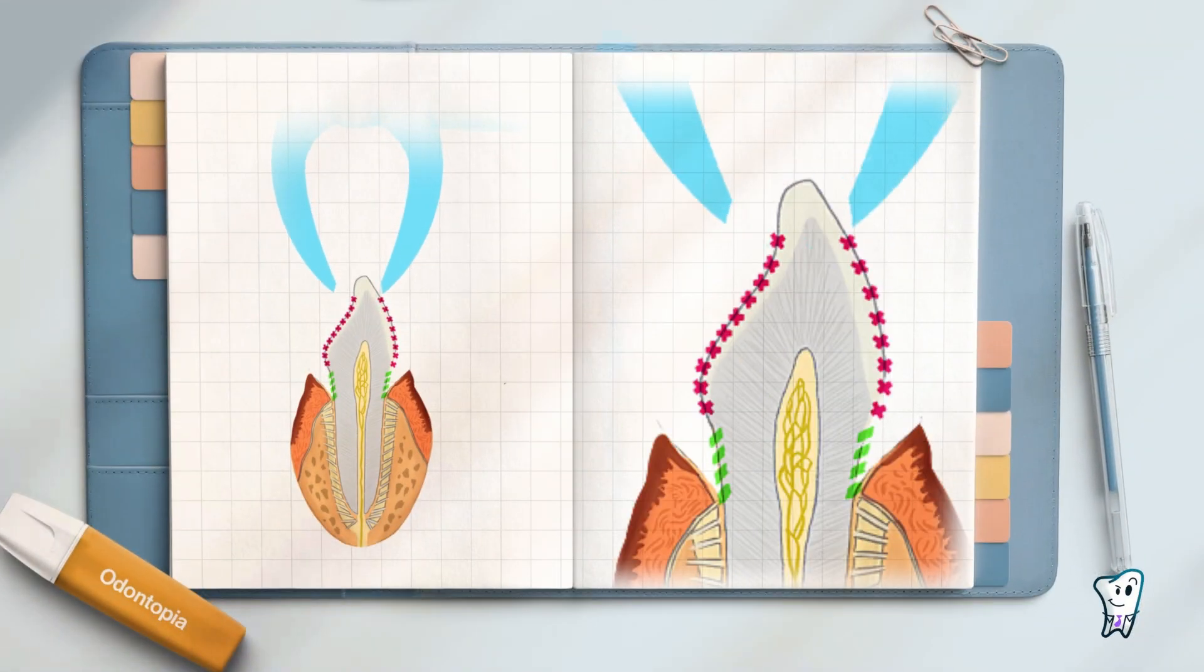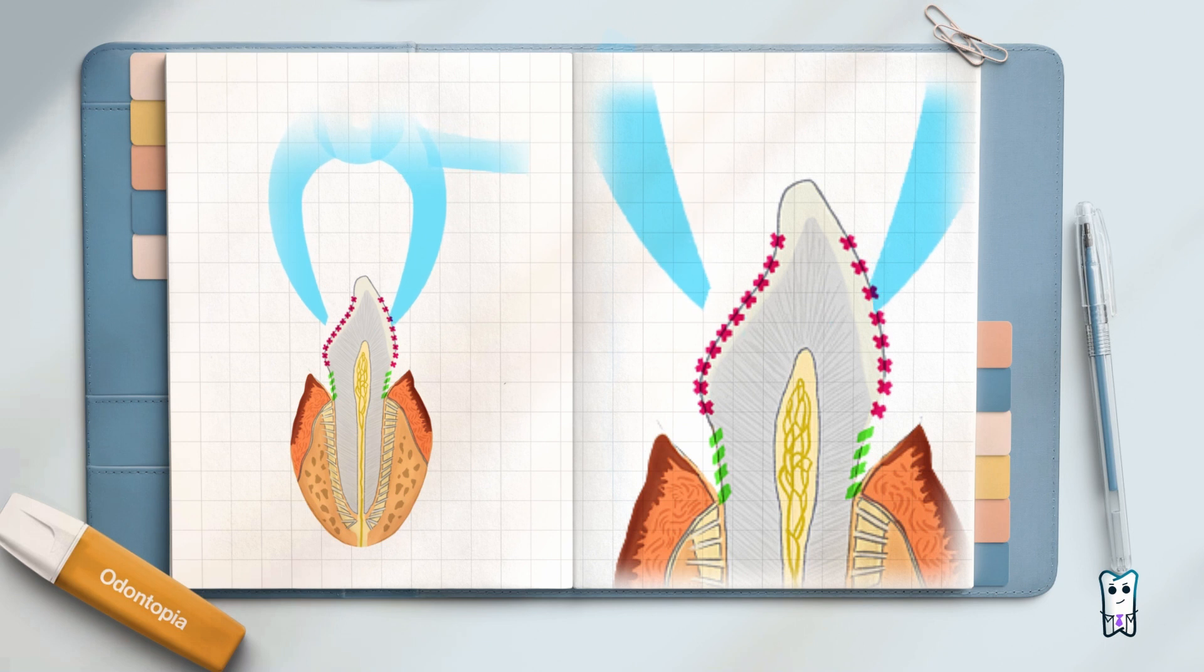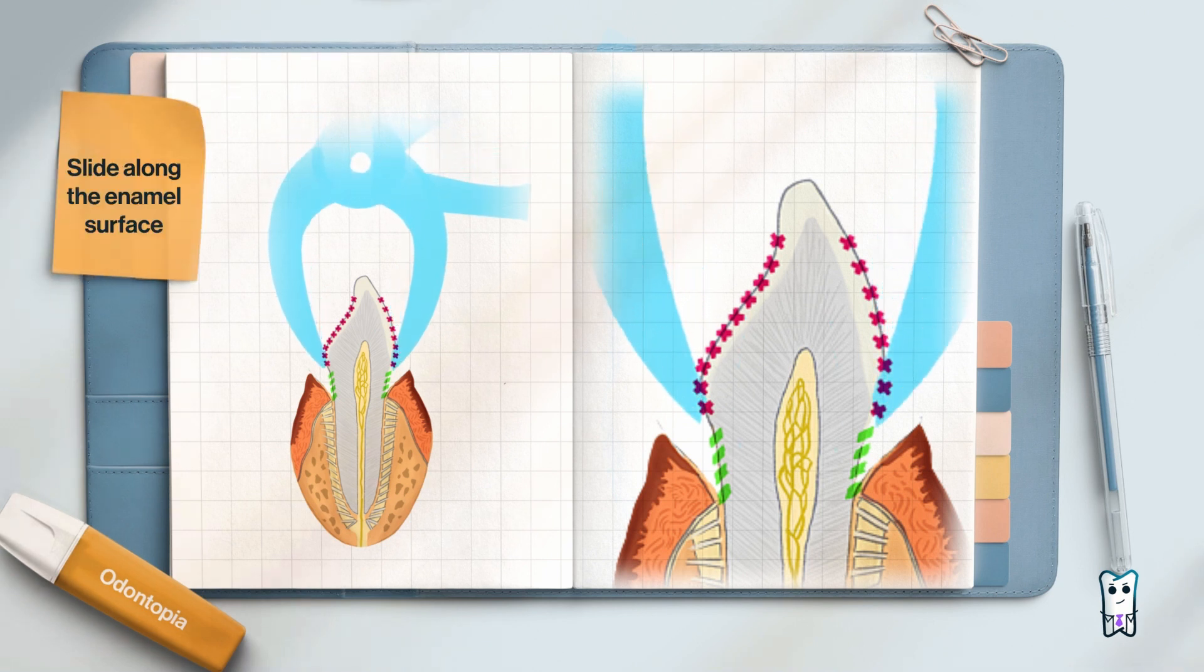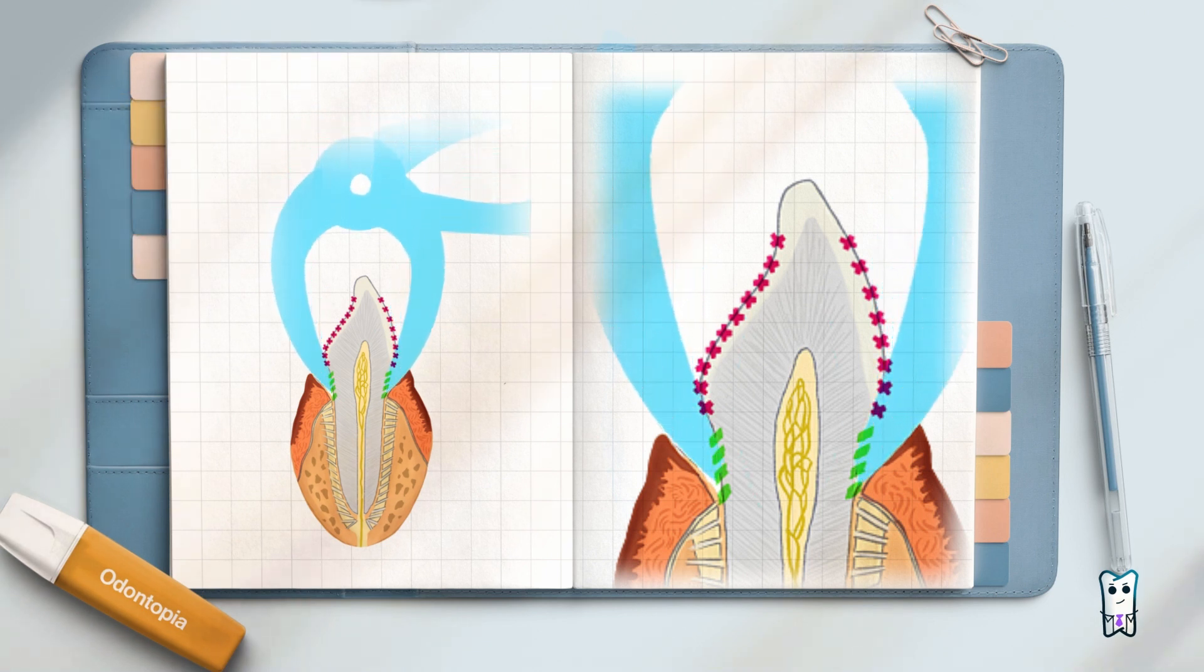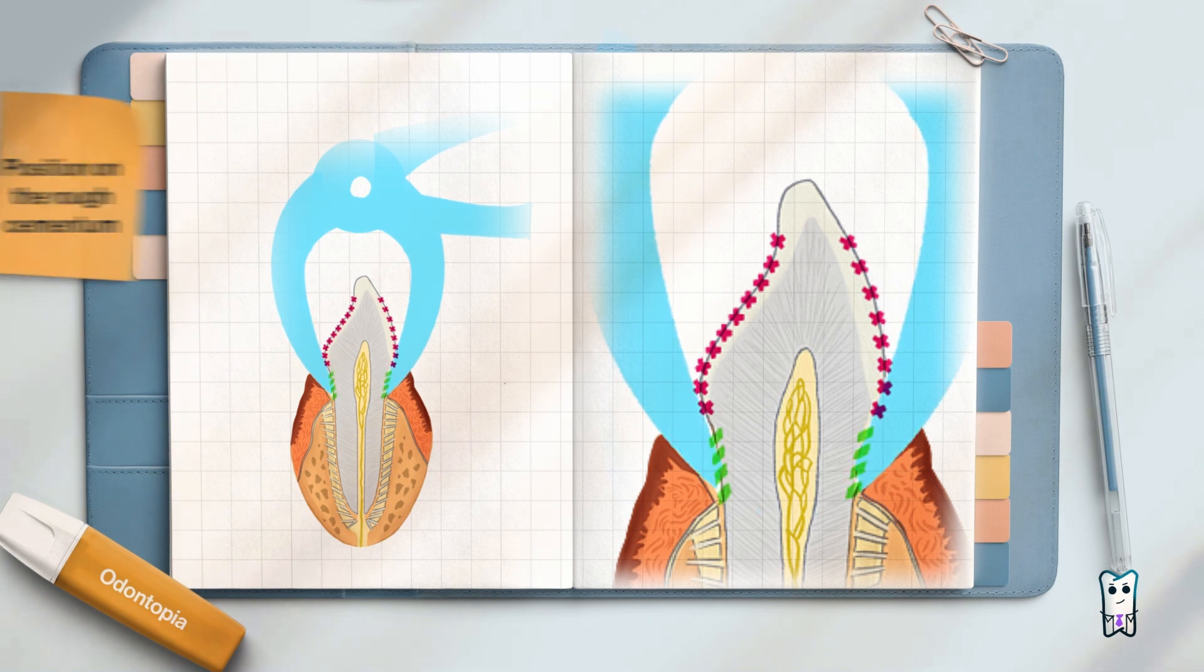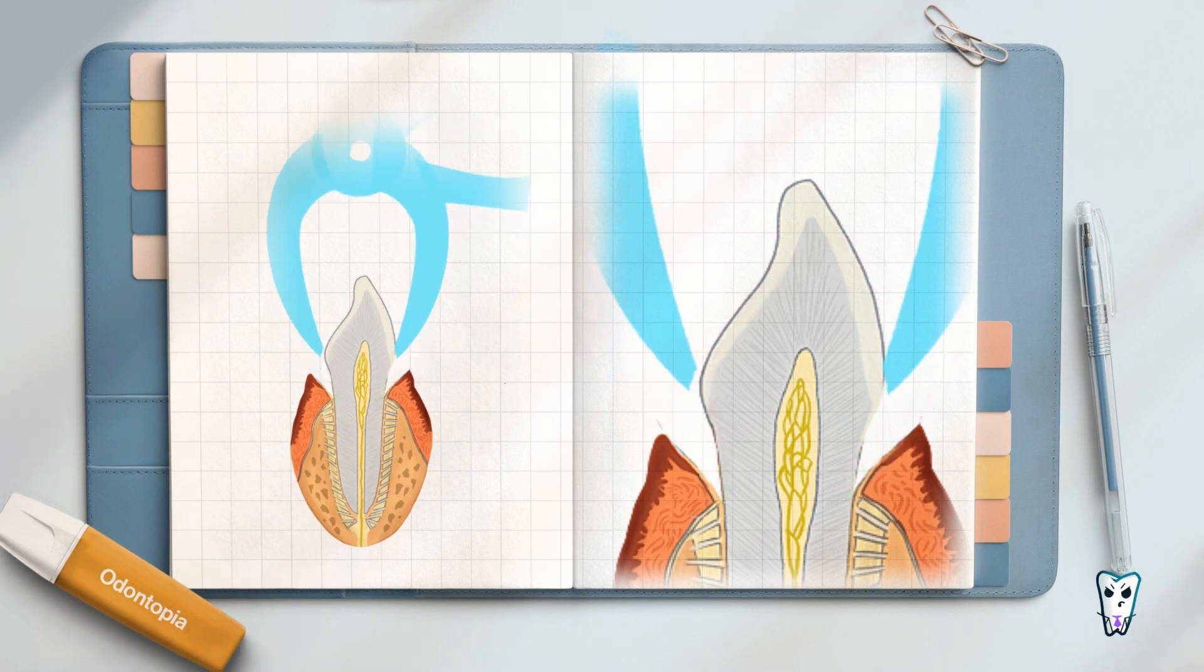Now you know how to hold the forceps, but how to position it properly. The idea is to slide the beaks along the enamel surface and grasp the root. The beaks must be positioned on the rough cementum and not on the smooth enamel. This will prevent slippage of the forceps during luxation.